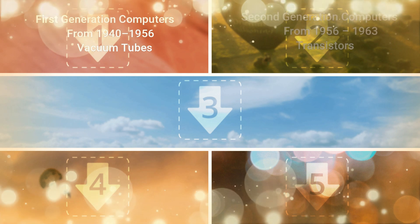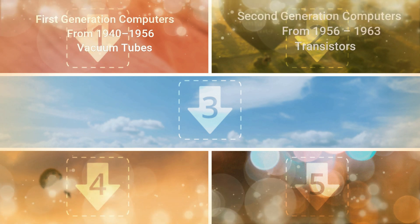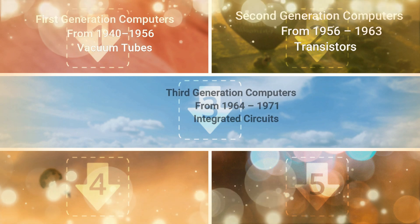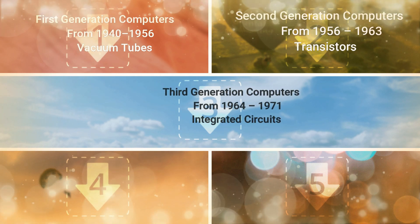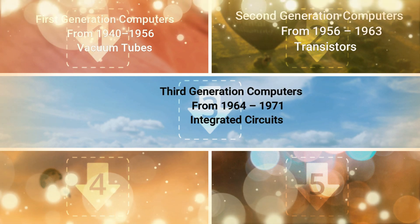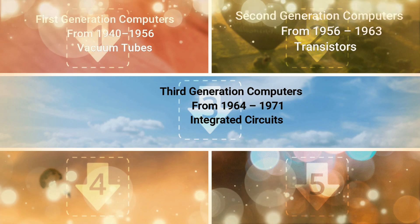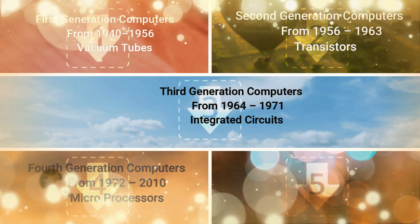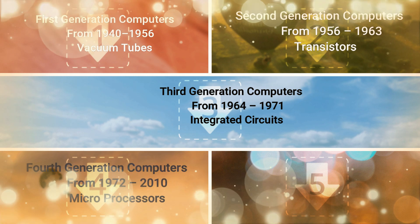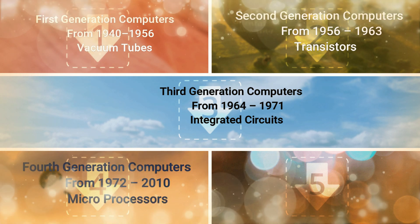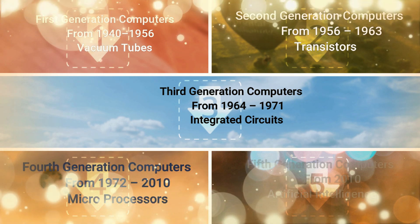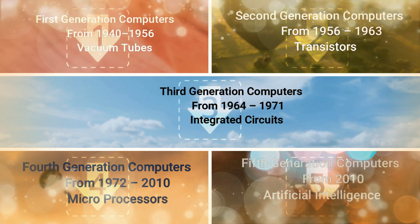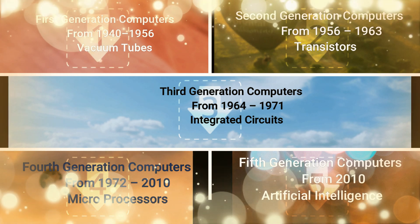Summary of generations: First generation computers from 1940 to 1956 used vacuum tubes. Second generation from 1956 to 1963 used transistors. Third generation from 1964 to 1971 used integrated circuits. Fourth generation from 1972 to 2010 used microprocessors. Fifth generation computers from 2010 onward use artificial intelligence.